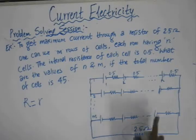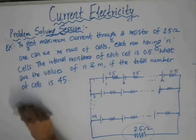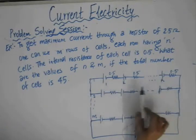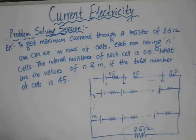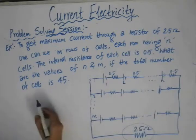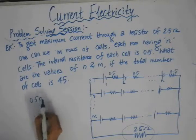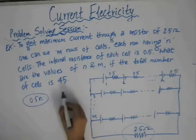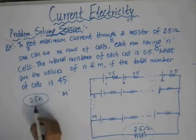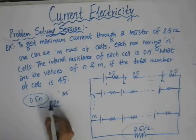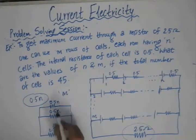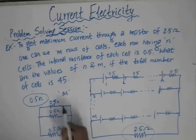First, we need to determine the total internal resistance present in the circuit. We'll start by finding the equivalent resistance for a single row. In a single row, we have N cells, each with internal resistance 0.5 Ohm, all connected in series. So the total resistance for a single row is 0.5 times N. We have M such rows connected in parallel, each branch having resistance 0.5N.